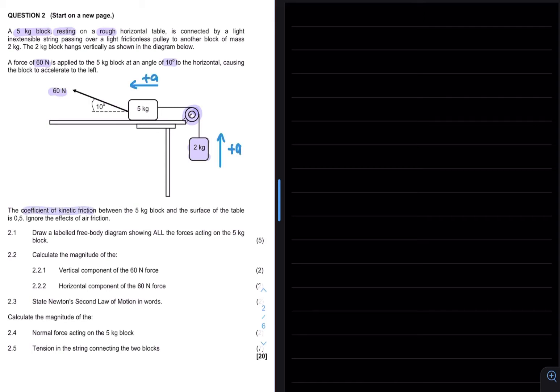The coefficient of kinetic friction between the 5kg block and the surface of the table is 0.5. Ignore all effects of air friction. Question 2.1 says draw a labelled free body diagram showing all the forces acting on the 5kg block for a total of 5 marks.